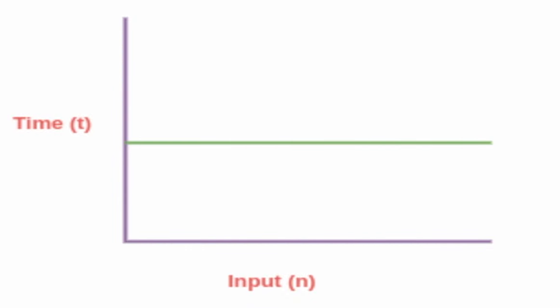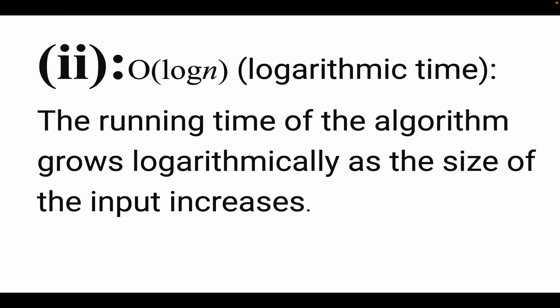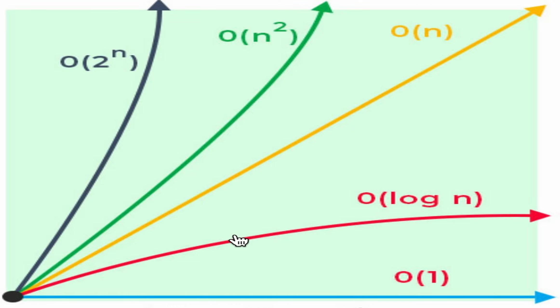The second one is logarithmic time, represented by O(log n). In this case, the running time of the algorithm grows logarithmically as the size of the input increases. As we can see in the graph, as the size of the input increases, the running time of the algorithm grows logarithmically.